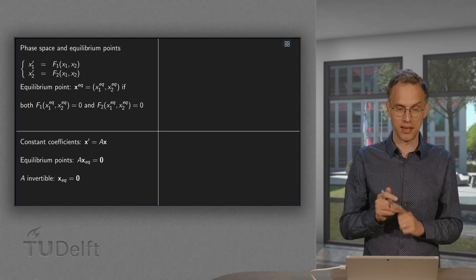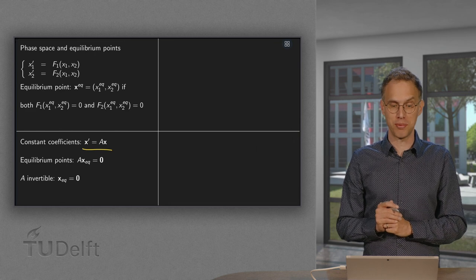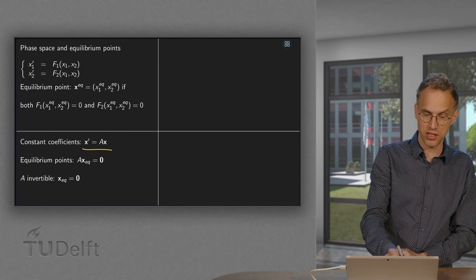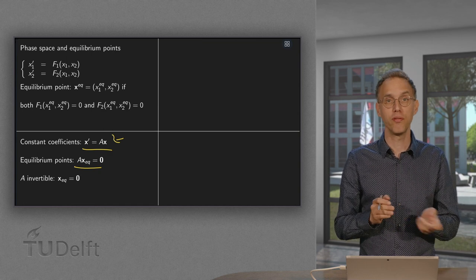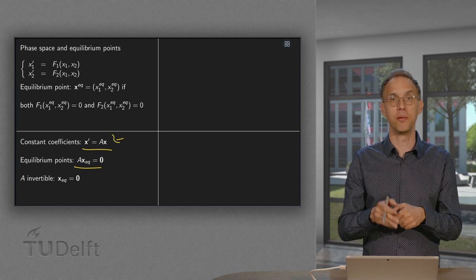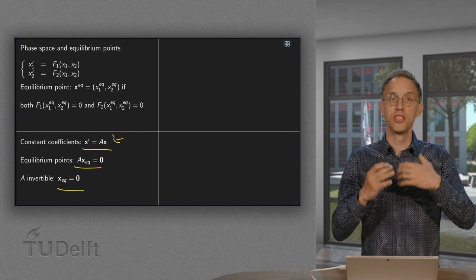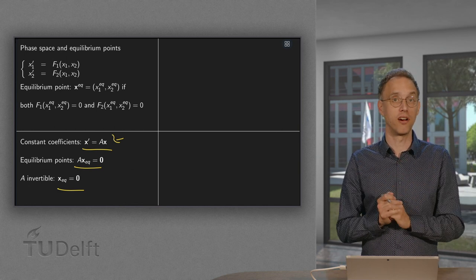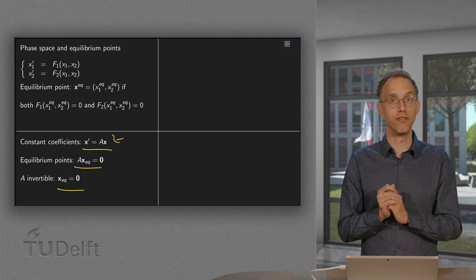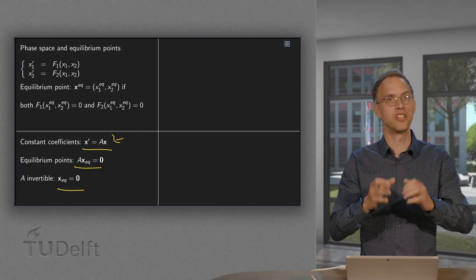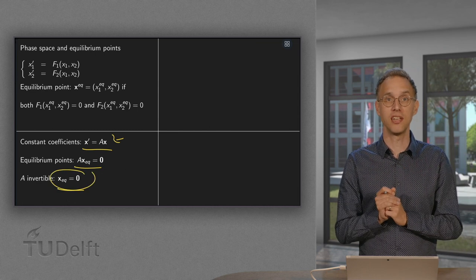How are we going to find them? We look at the case with constant coefficients: x' equals matrix A times x. If you have an equilibrium point, the right-hand side must be zero, so A times x_equilibrium equals the zero vector. Now if A is invertible, we get x_equilibrium equals zero. A is invertible when there are no zero eigenvalues, which will be the case for most examples we study. So in most cases, the only equilibrium point is the origin.